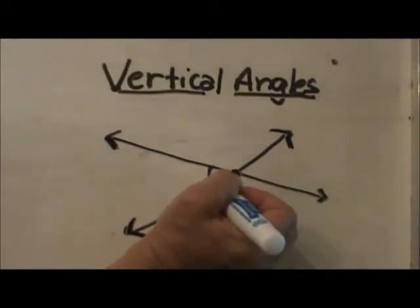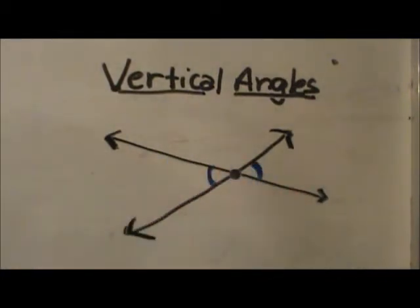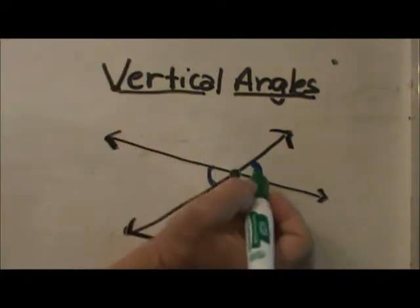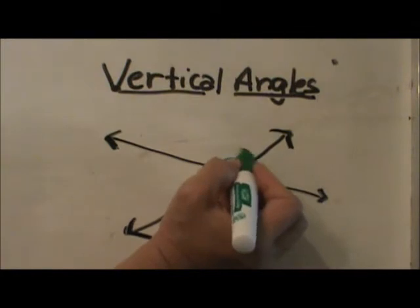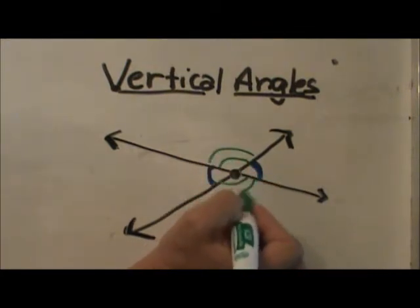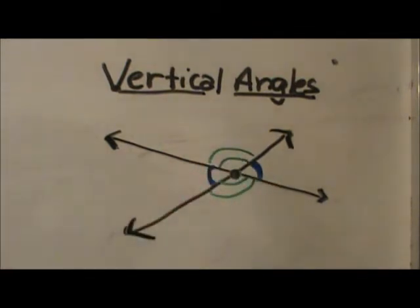So I am going to mark these angles in blue with one little arc showing that they are congruent to each other. Then I am going to mark these other angles congruent in green with two arcs, and they are across from each other. These are what vertical angles are, so these two blue angles are congruent and these two green angles are congruent.